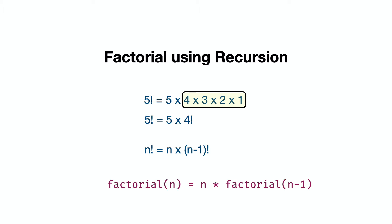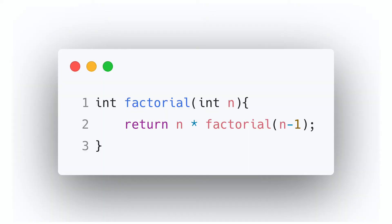The factorial is defined as the product of all natural numbers up to n. Factorial of 5 is 5 times 4 times 3 times 2 times 1. Factorial of 4 is 4 times 3 times 2 times 1. Factorial of 3 is 3 times 2 times 1. This means factorial(n) equals n times factorial(n-1). So I will return n times factorial(n-1).